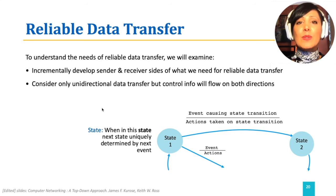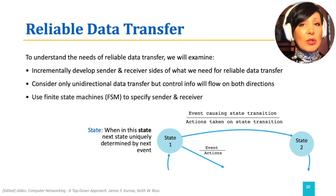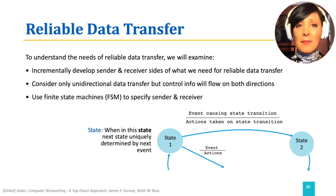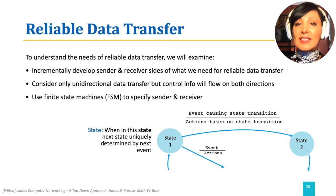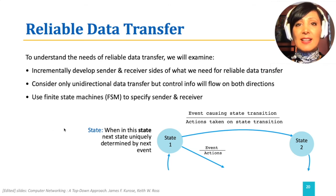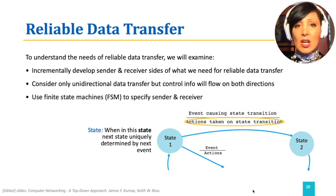We will use finite state machines to specify sender and receiver events, actions, and states. The figure shows an example finite state machine, or FSM. The change from one state to another is called a transition. A transition is caused by an event, and some actions are associated with the transition.